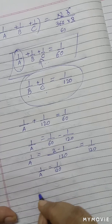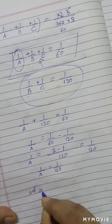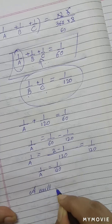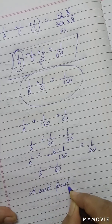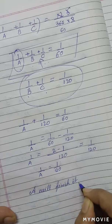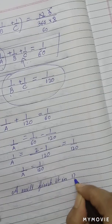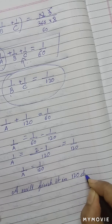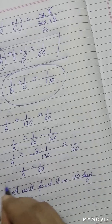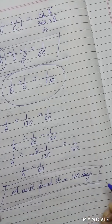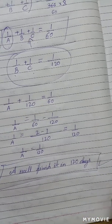This clearly indicates that A will finish the work in 120 days. In one day, if A does 1/120th part of the work, then in 120 days she will be able to complete the work. That's it.